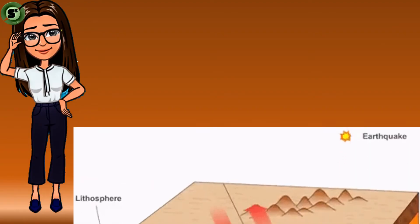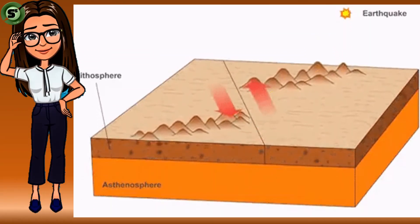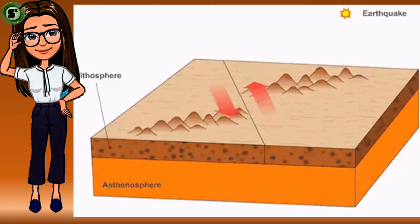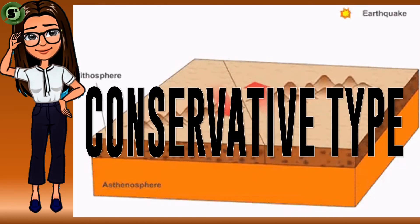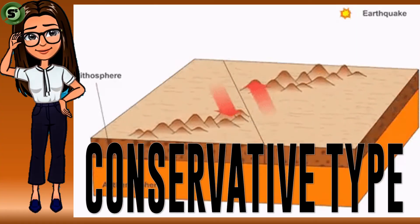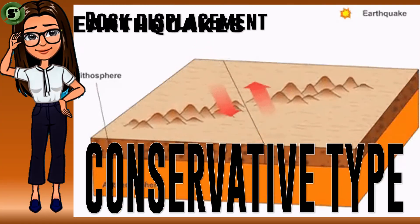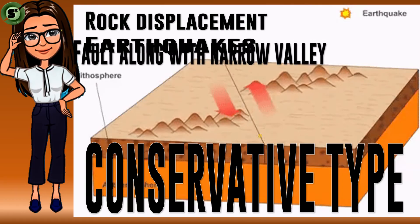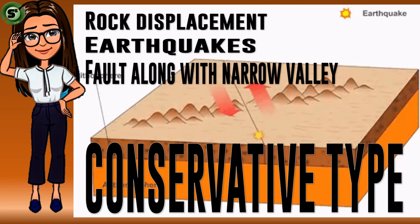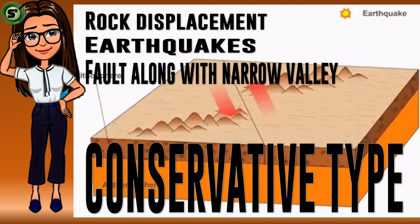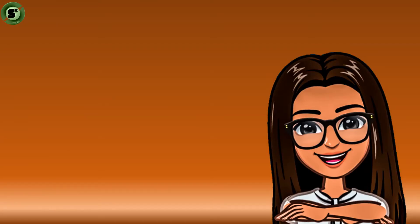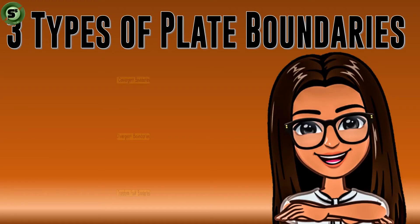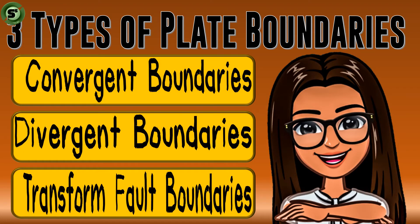Before I end my lecture about transform fault boundaries, I want to repeat this: sliding or gliding plates is the conservative type of plate boundaries. It only results in rock displacement and frequent earthquakes. Aside from displaced rocks and earthquakes, faults along narrow valley may be formed, like the Alpine Fault and San Andreas Fault. And that is the end of our discussion about the three types of plate boundaries. I hope that you clearly understand how the lithospheric plates behave.